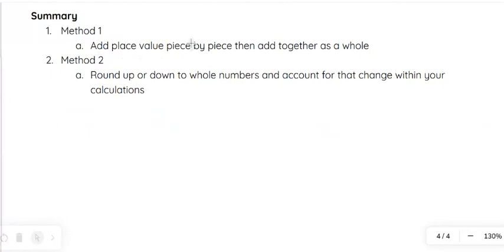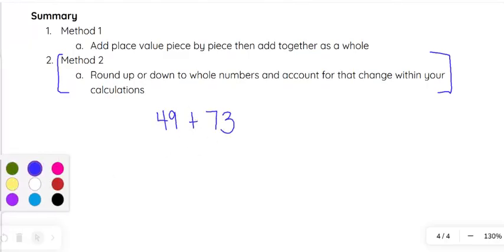Just as a quick reminder of our summary, we can look at adding place value piece by piece and then adding it together as a whole. I did want to talk about method 2 here. Another option you could technically round up. Let's say I have something like 49 plus 73. I want to just talk through this other option for a second. 49, I could rewrite 49 as 50 minus 1. 50 minus 1 is going to essentially replace 49.